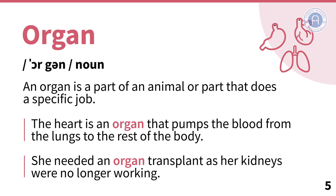Organ. An organ is a part of an animal or body that does a specific job. For example, the heart is an organ that pumps the blood from the lungs to the rest of the body. She needed an organ transplant as her kidneys were no longer working.